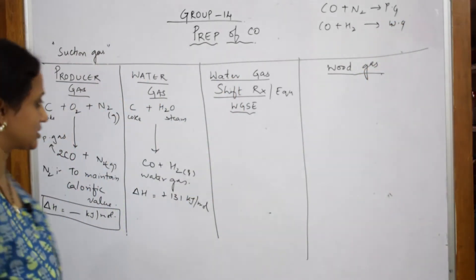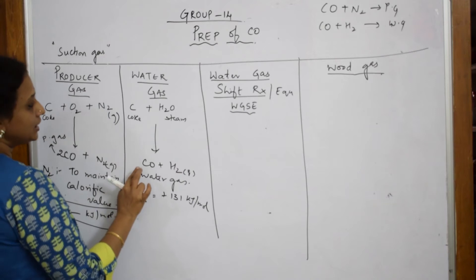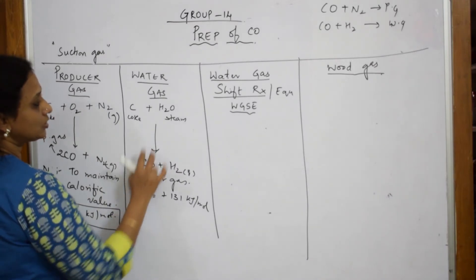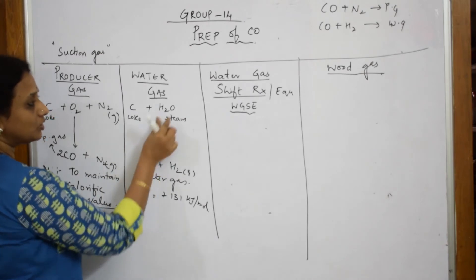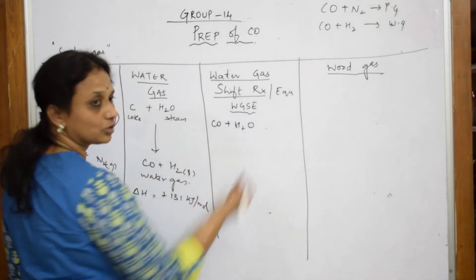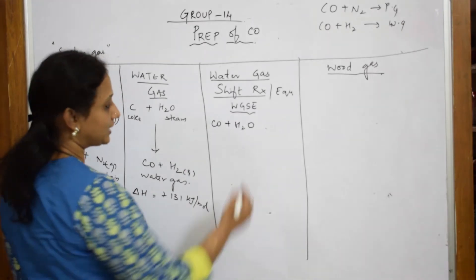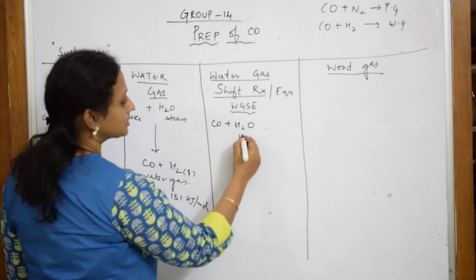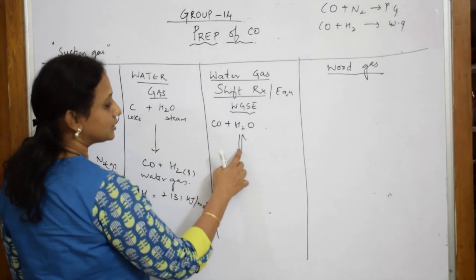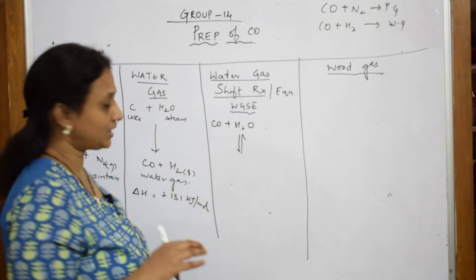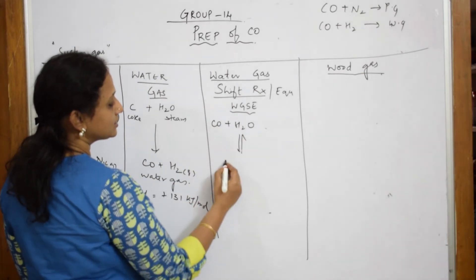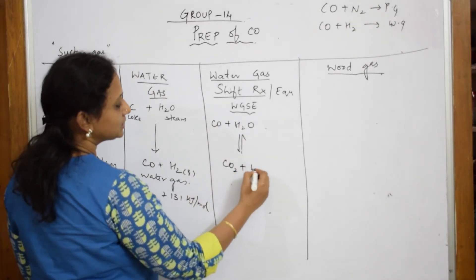Let us come back to the water gas shift reaction. Now, observe carefully. Your carbon monoxide and your water are going to combine — this is a reversible reaction. Careful: there is going to be a shift of equilibrium. So this is a reversible reaction. What do you get? You get carbon dioxide plus hydrogen.